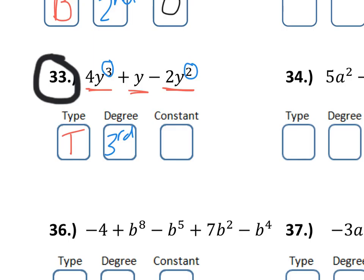And, again, the constant is a number with no variables attached to it. We don't see that again, so our constant is 0.